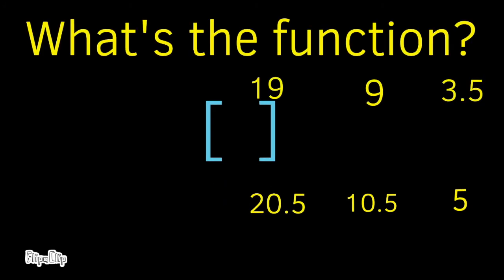What was the function? A 3.5 went in and a 5 came out. A 9 went in and a 10.5 came out. And a 19 went in and a 20.5 came out. The function was add 1.5.